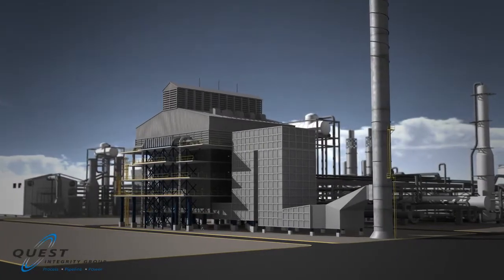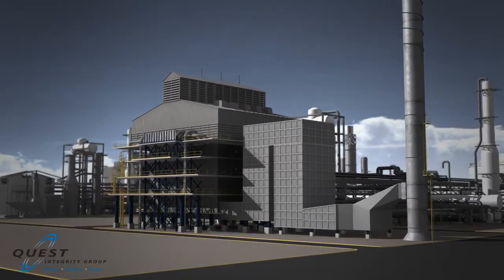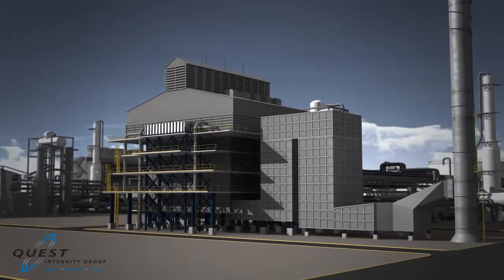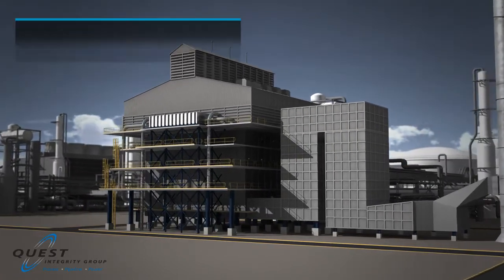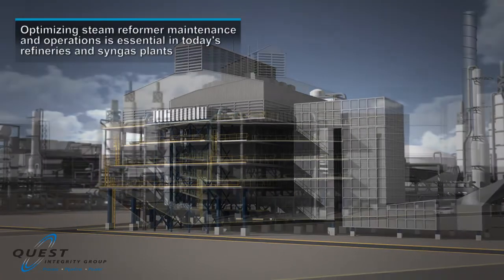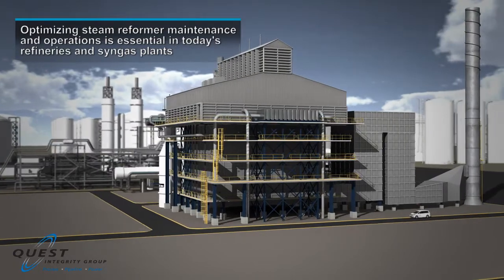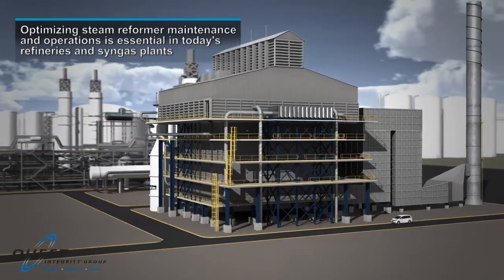The primary steam reformer is a critical operating asset in refineries and syngas plants. Reformer tubes are a critical component within the steam reformer and operate at high pressures, high temperatures, and the upper limits of the metallurgy.